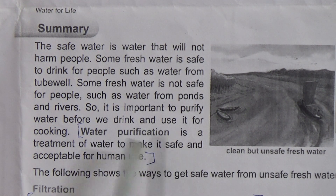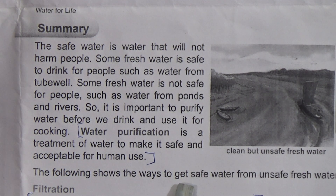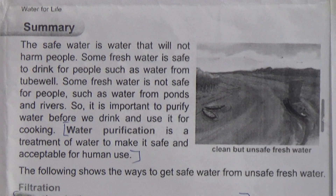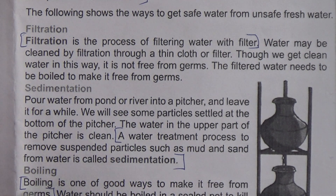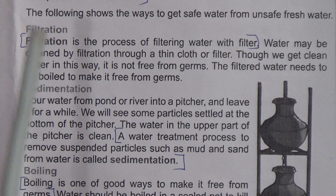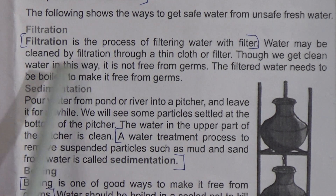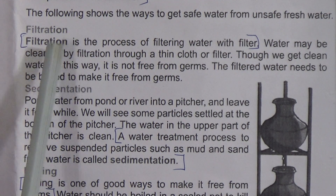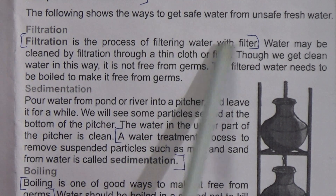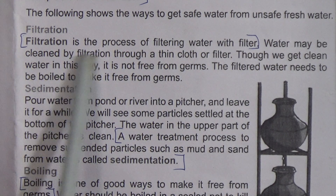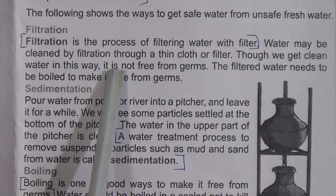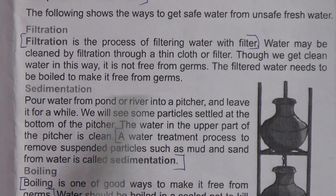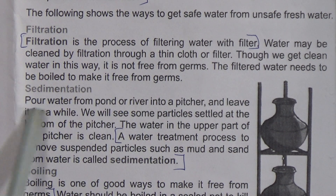The following are ways to get safe water from unsafe fresh water: filtration, sedimentation, boiling, and purifying water with chemicals. Filtration is the process of filtering water with a filter. Water may be cleaned by filtration through a thin cloth or filter. Though we get clean water this way, it is not free from germs. The filtered water needs to be boiled to make it free from germs.